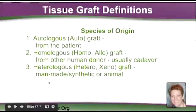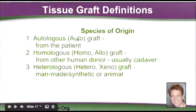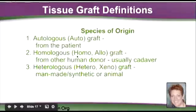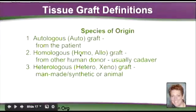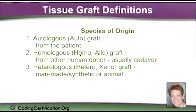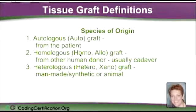The first thing we need to understand are the types of grafts out there. There are autografts — 'auto' meaning self — so it's basically a graft coming from the patient. Then there's homologous grafts, also known as homo or allografts. 'Homo' meaning same, so it's coming from the same species — a human donor, usually a cadaver. And then the third type is the hetero or xenograft, which could be a manmade or synthetic type of graft. Those are becoming more and more popular, and you'll see the code selection growing because of all the different types. And then there are animal grafts.